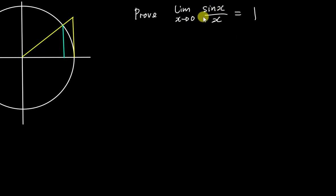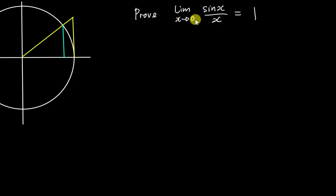In this video I will show you how to prove this limits question: the limit as x approaches zero of sin(x)/x equals one. So first you might ask, why do we need to prove it? When we solve the limit normally, we just substitute zero into both, but if you substitute sin(0)/0 you will get undefined — a math error. This is the reason why we need to use another method.